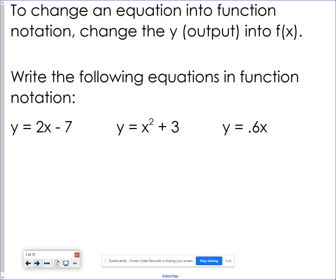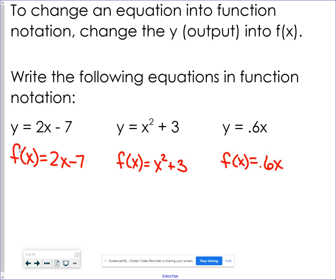So for these three equations, I want to just be able to change the output, the y. Instead of a y, I want it to be f of x. So here instead of y equals 2x minus 7, it would just be f of x equals 2x minus 7. It's the only change to put it into function notation. Take out the y, change it into that f of x. So f of x equals x squared plus 3, or f of x equals 0.6 times x.